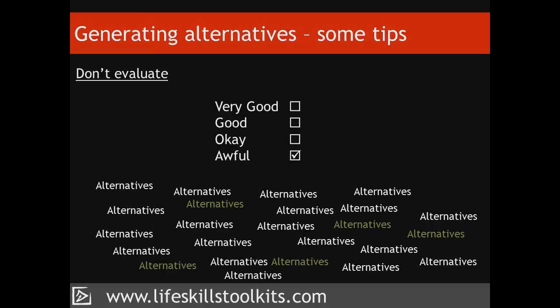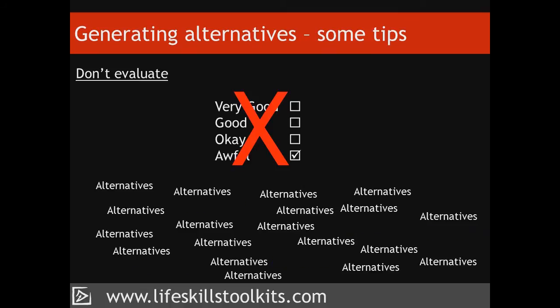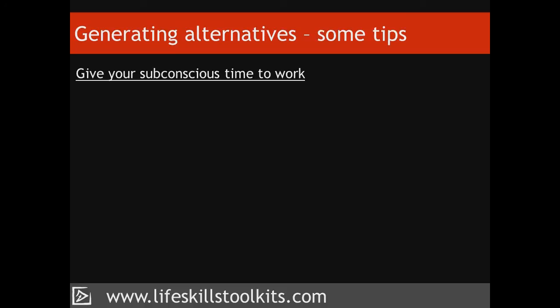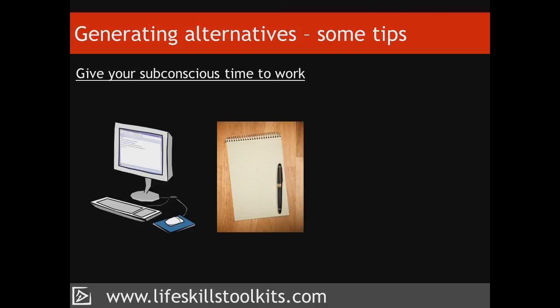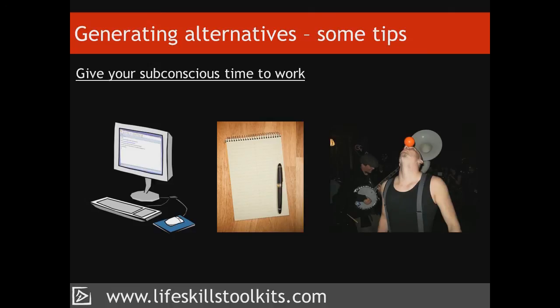Here are three things to keep in mind when generating alternatives. One: identify alternatives, but don't evaluate them. At this stage, you want to identify as many alternatives as you can. If you start considering the pros and cons, you stifle your creativity because rejecting an alternative will automatically filter out similar alternatives, one of which might provide a better solution. Two: give your subconscious time to work. Inspiration strikes when you're not thinking about the problem. If you feel stuck staring at a list, get up and do something different. When you least expect it, you'll think of an alternative — write it down immediately.